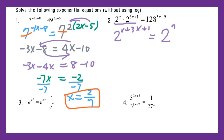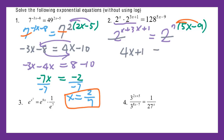Then for the original 5x minus 9, I will do the distributive property. So this time with the same base, I will get 4x plus 1 equal to 35x minus 63.